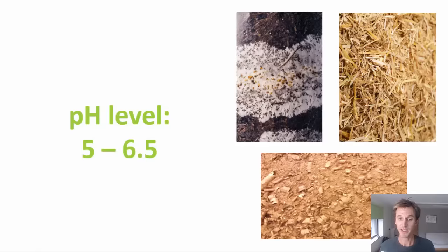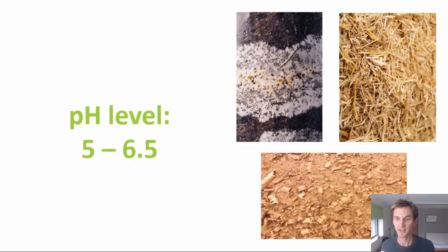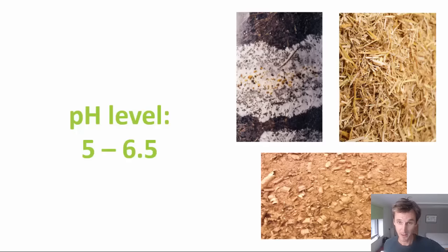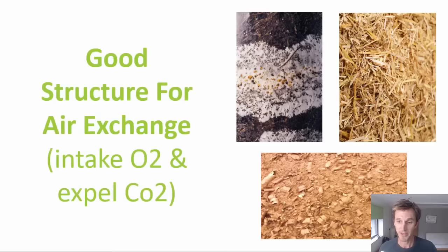You're also looking for a pH level in the slightly acidic range — around about 5 to 6.5 pH is ideal for most substrates. Some mushrooms, for example oyster mushrooms, can tolerate higher pH levels up around 7 or 8, and that's actually one of the things we utilize in low-tech mushroom farming. We'll come and talk about that again in a minute when we touch on pasteurization.